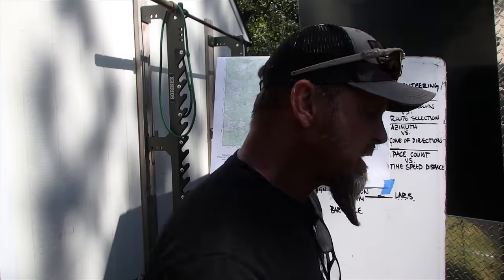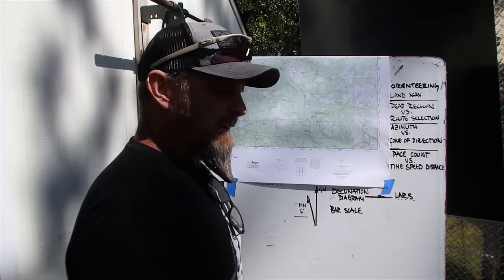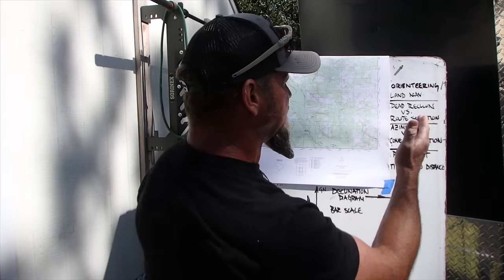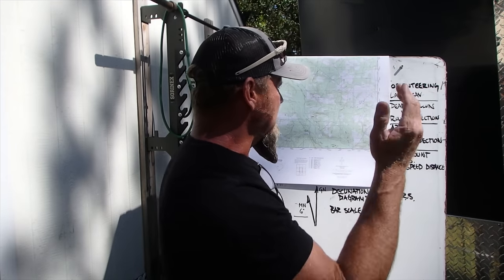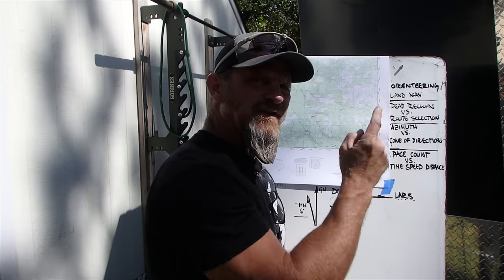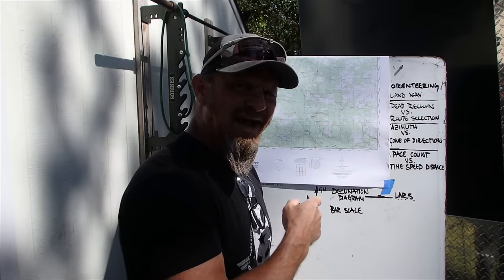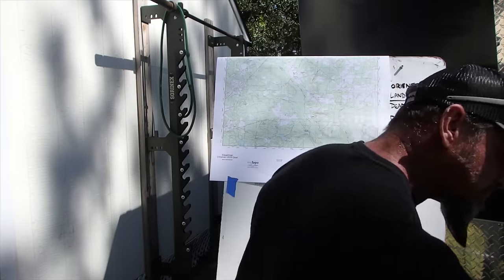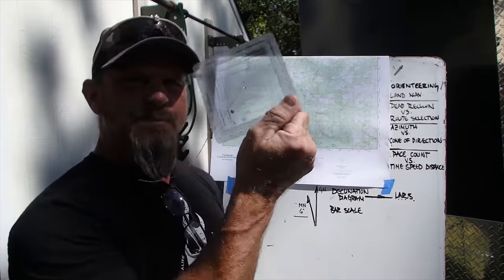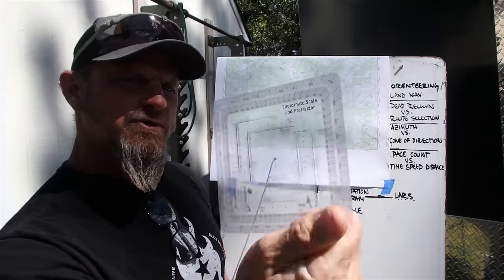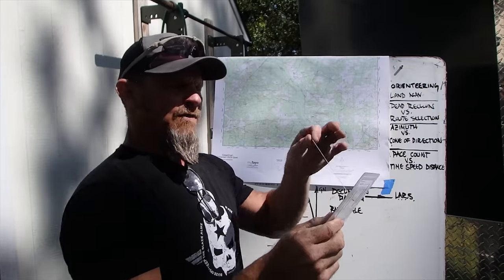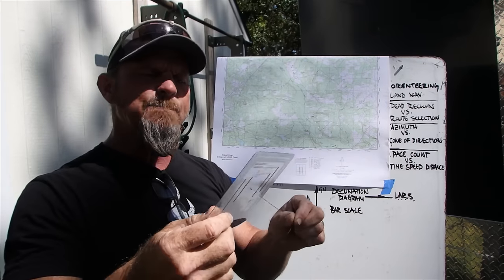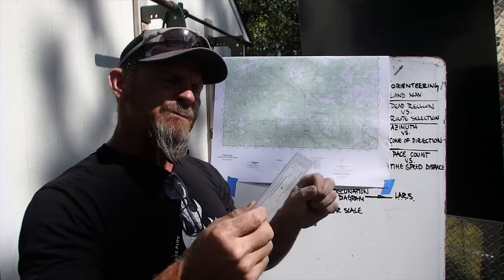Now let's talk about planning a route. In orienteering we're going to plan a route; in land navigation we're going to dead reckon it. We need to find an azimuth and stay on that azimuth heading. For that we need to use a protractor. I've threaded a piece of gutted suspension cord through mine to give me a precise measurement.